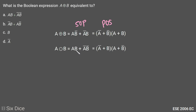A XNOR B (equivalent) in SOP form is A·B + Ā·B̄, and in POS form it will be (Ā + B) in the first bracket and (Ā + B̄) in the second bracket. So our answer for this question is option B, and option A is given in the SOP form of A XOR B.